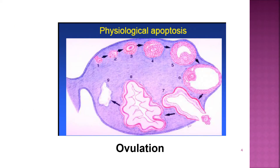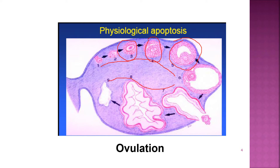This picture shows physiological apoptosis during ovulation. When approaching ovulation, a lot of cells are being formed — the granulosa cells and the theca cells become more prominent. After ovulation occurs, the cells regress and undergo physiological apoptosis.